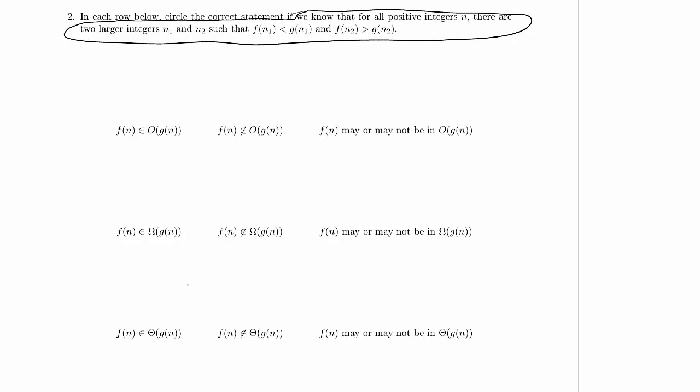So we know there's two larger integers than any given integer, such that for one of those values, g is larger, and for one of those values, f is larger. So roughly speaking, what this means is that these functions keep crossing and re-crossing off to infinity. There's never one that is completely dominant over the other one, in the sense that it is strictly larger.